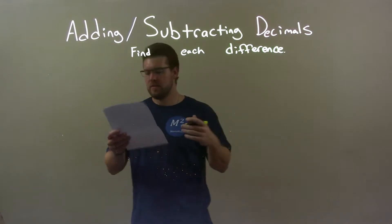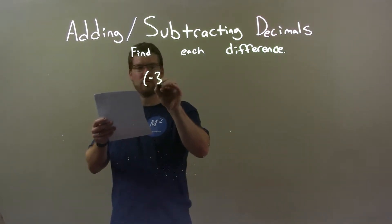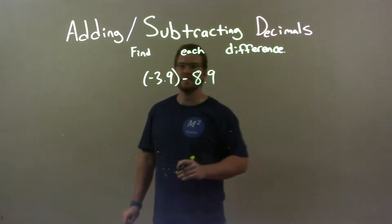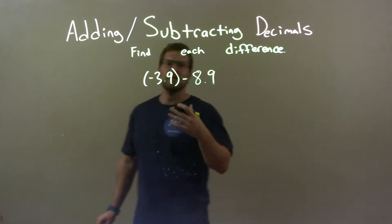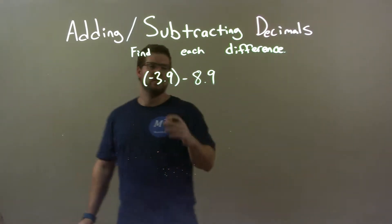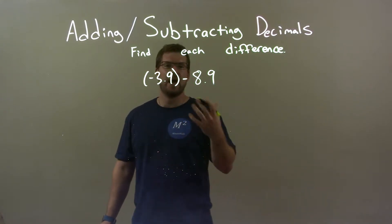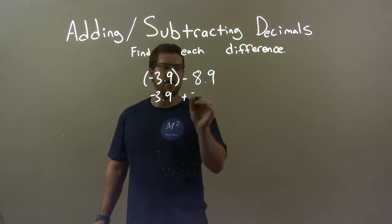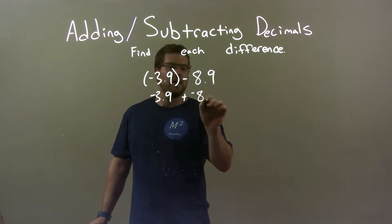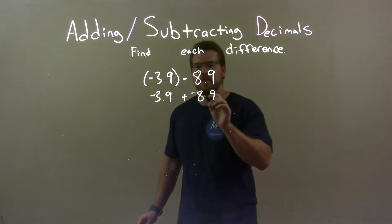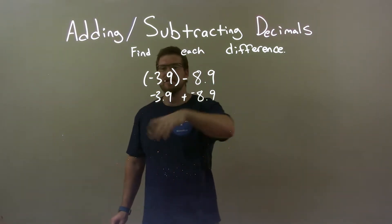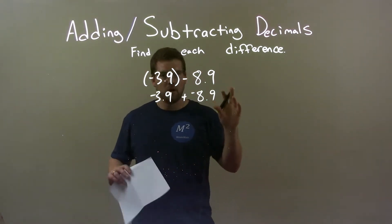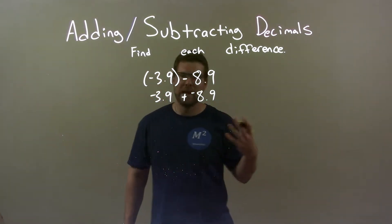We were given these numbers: negative 3.9 minus 8.9. When I subtract these two numbers, subtraction is the same thing as adding a negative. This benefits me because that becomes negative 3.9 plus a negative 8.9. This is treated just like an addition problem, but we know the number is going to be a larger negative number.